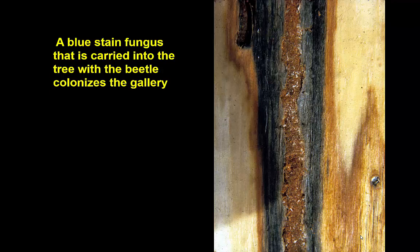In this picture, just underneath the bark, the central part shows the gallery made by the female. Next to it you can see a blue-gray discoloration produced by the growth of blue-stain fungi. These are fungi that colonize the wounds — the spores were carried in by the beetles, the wounds made by the beetles allowed the fungi to have an entry into the plant, and they grow beyond these points where they were introduced by the mountain pine beetle.